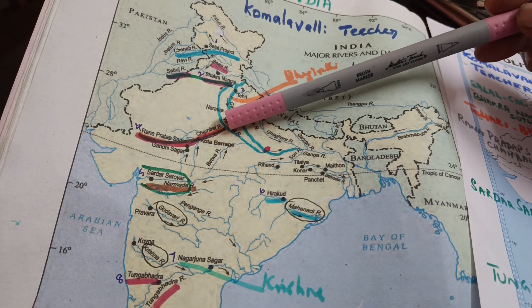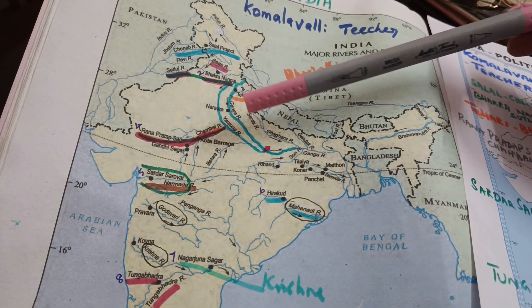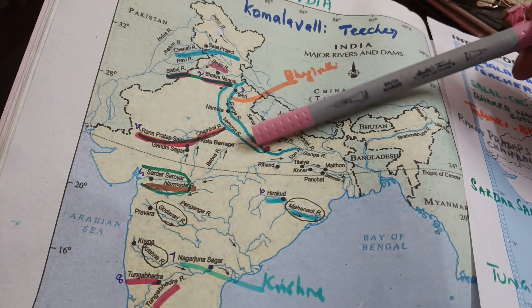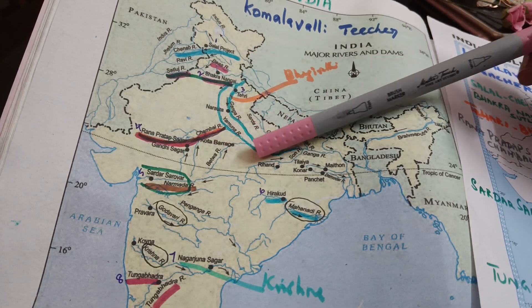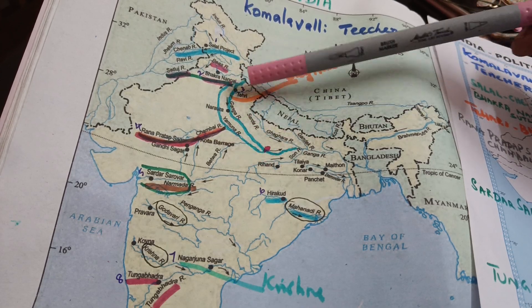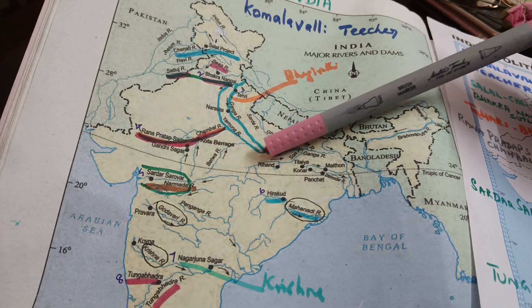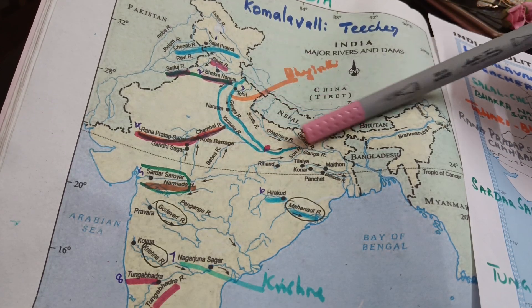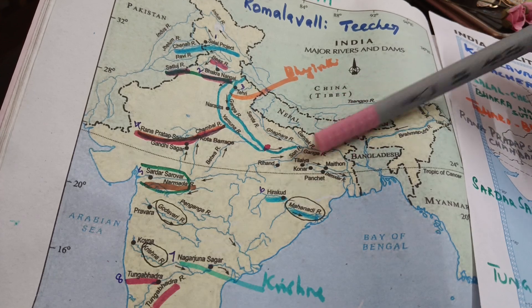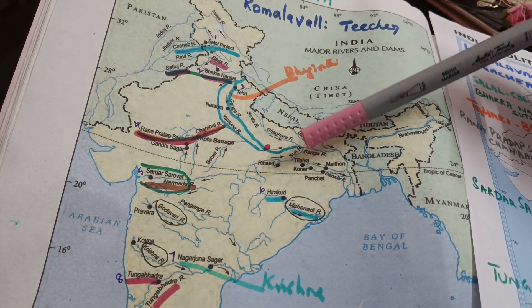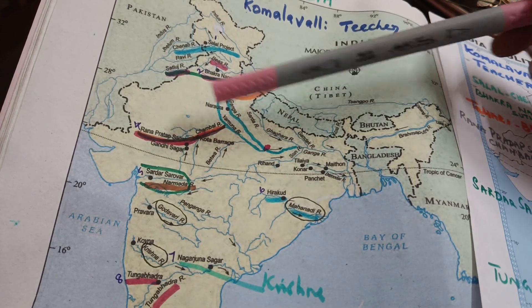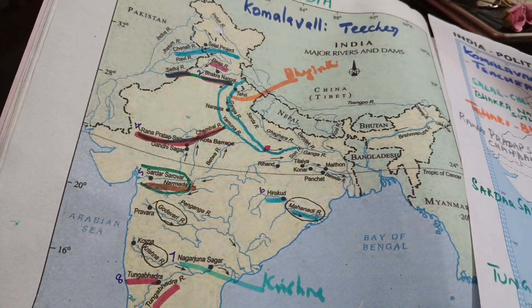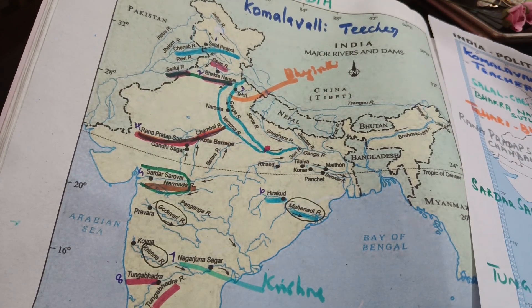Moving further, you reach Rajasthan. There is Rana Pratap Sagar Dam, which is on the Chambal river. Here on the map you can see tributaries — Yamuna, Ganga — intersecting at Allahabad. The Koshi and Chambal rivers are also visible. Rana Pratap Sagar Dam is on this Chambal river.